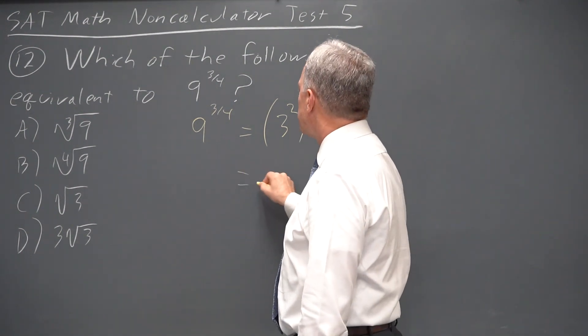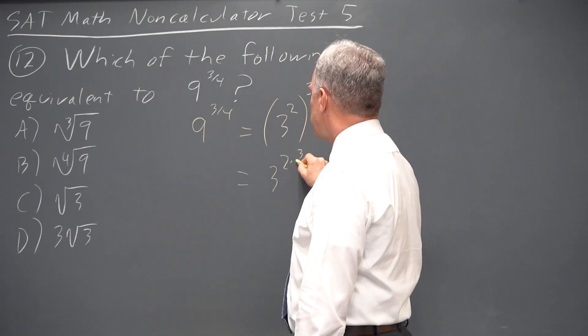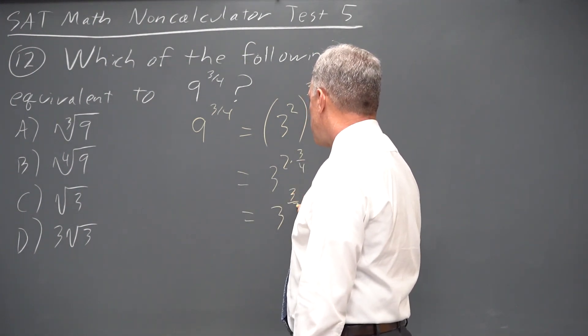Again, power of power, we multiply exponents, so that's three to the two times three-fourths, which is three to the three-halves.